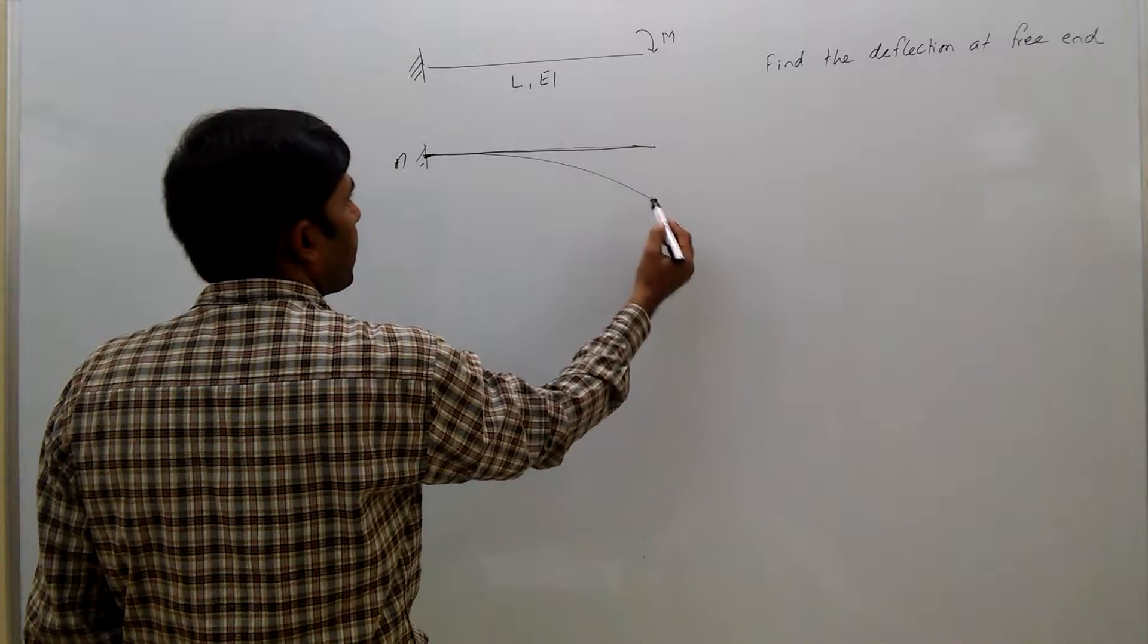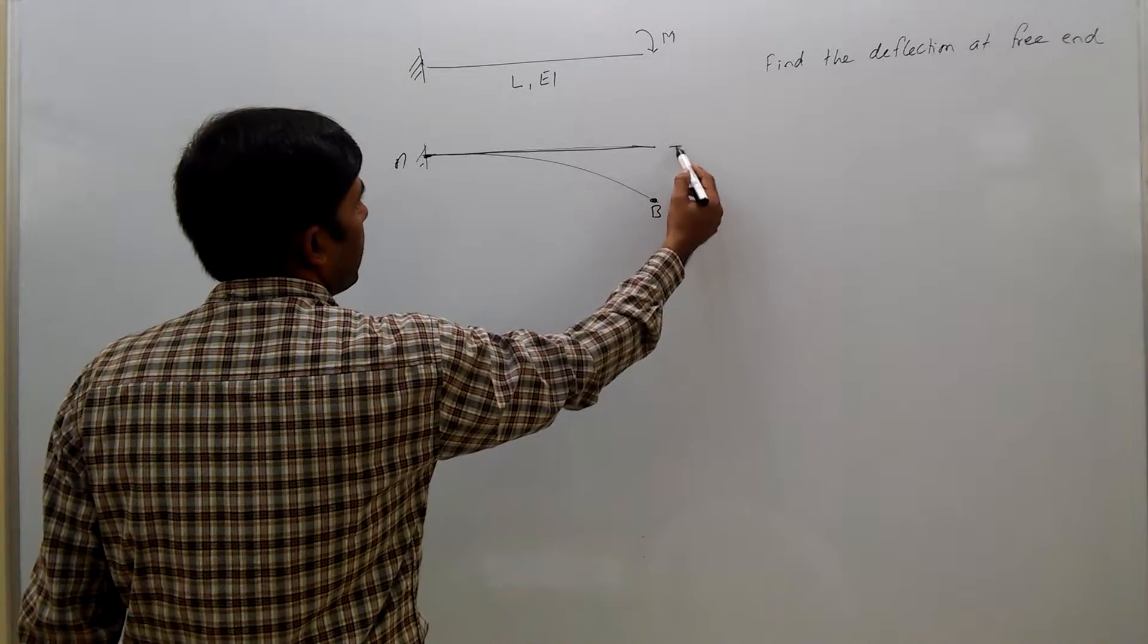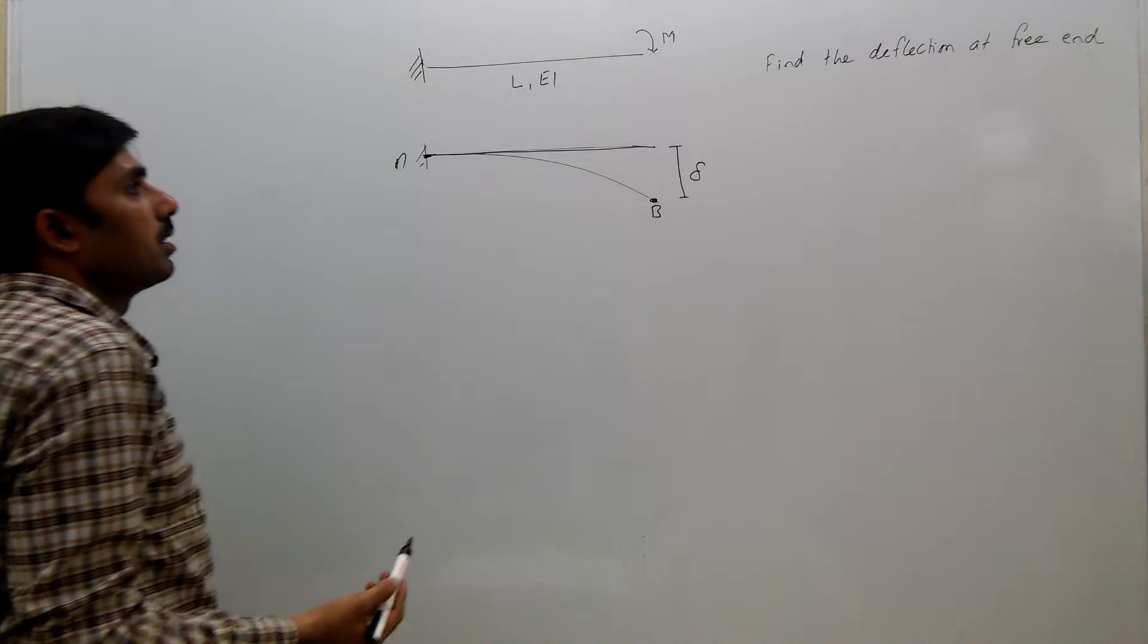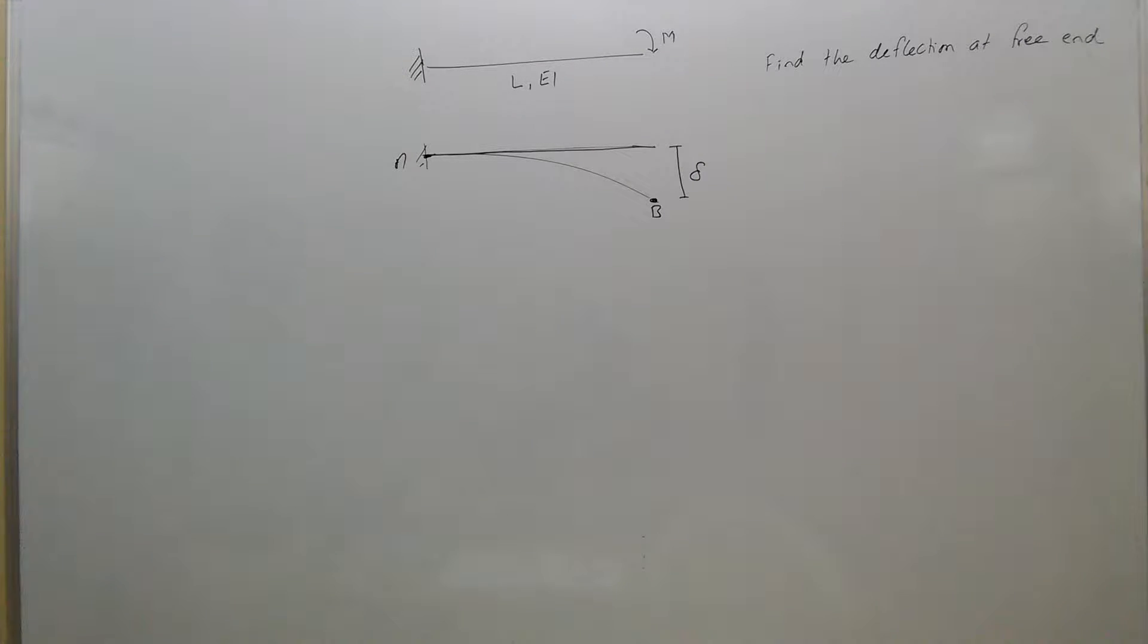Now, this is point B on the elastic curve. Then this deviation delta will be obtained by the moment of area of the curvature diagram between A and B.